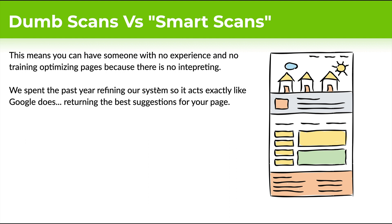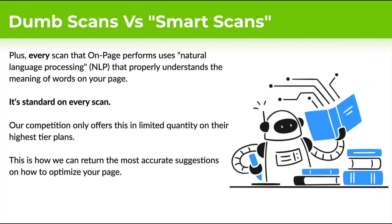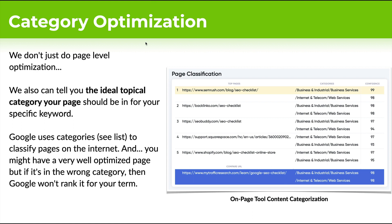We spent the past year refining our system so it acts exactly like Google, returning the best suggestions for your page. Every single scan on OnPage.ai uses natural language processing, which properly understands the meaning of the words on your page — it's standard on every single scan. The competition doesn't offer this unless you take their highest-tier programs, and even then they offer it in limited quantity. On OnPage.ai, NLP — using artificial intelligence to understand the context between words — is standard on every single scan.